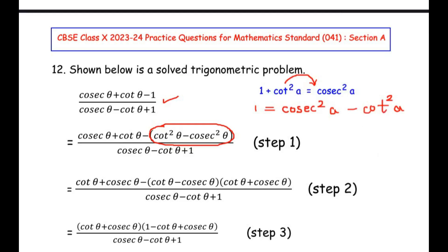But, as you can see in this step, they have reversed it and have written it as cot square theta minus cosec square theta. So, 1 has to be written as cosec square theta minus cot square theta, not as cot square theta minus cosec square theta. So, the first step of this given question is wrong.